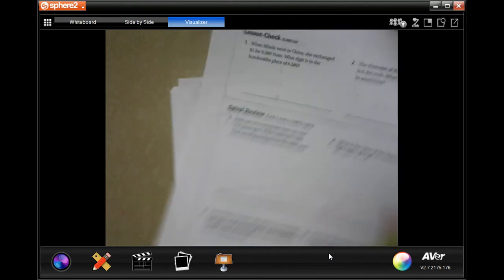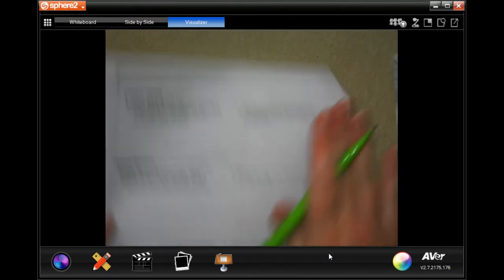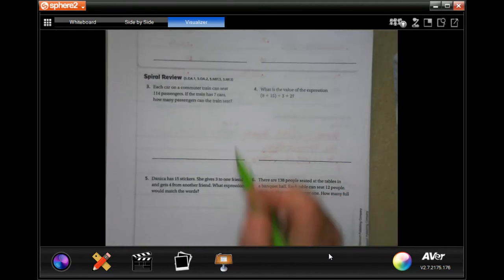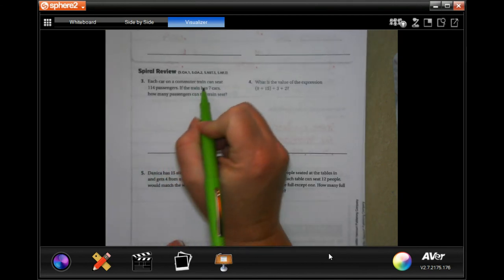All right guys, you guys are going to do the lesson check on the back. You totally can, I believe in you. And we're going to go ahead and do the spiral review. So spiral review says each car on a commuter train can seat 114 passengers.